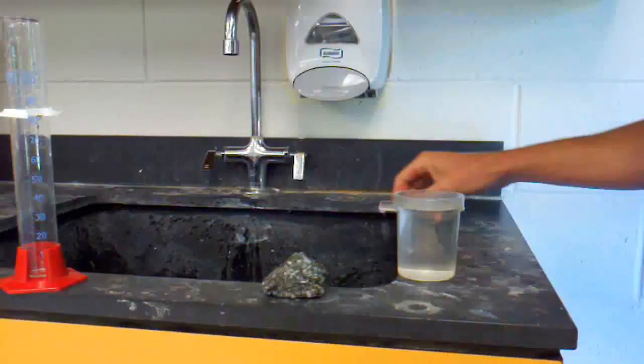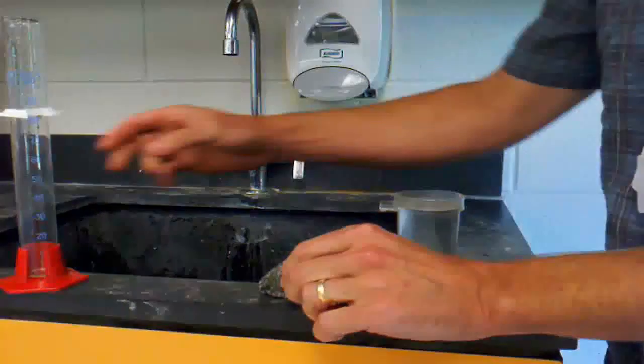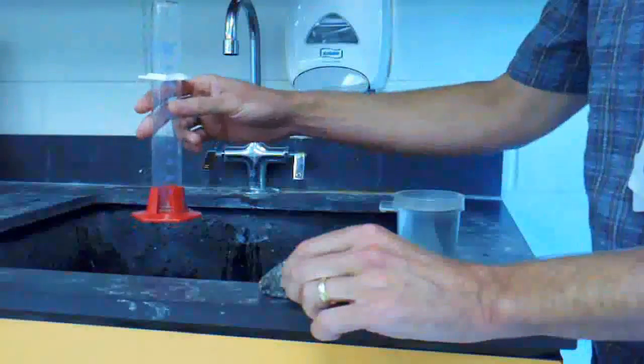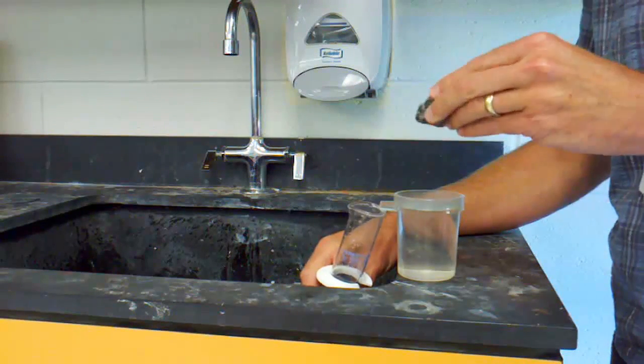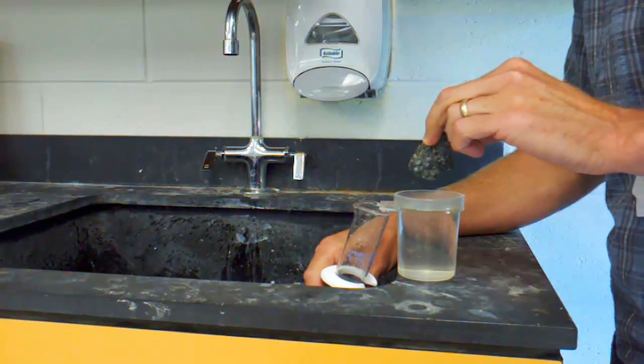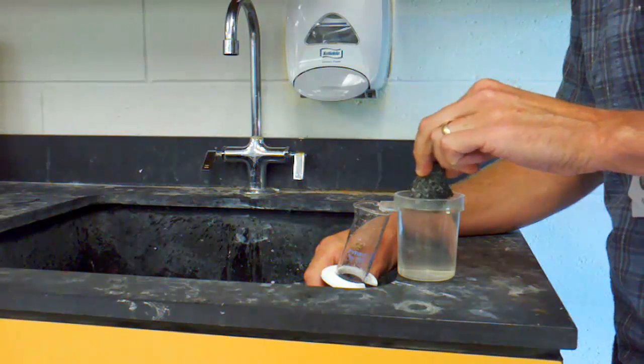Without bumping the overflow beaker, I'll carefully pick up the rock and a graduated cylinder. Holding the graduated cylinder underneath the spout, I'll very carefully and slowly lower the rock down into the overflow cup.